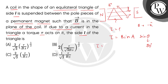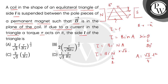So we get torque by magnitude equal to B I N A, where N is the number of turns in the coil. Now when we express the area of the equilateral triangle, this will be square root of 3 times L squared divided by 4. So we will get torque equal to B, I, N — we will take N as 1 — and area is square root of 3 L squared divided by 4.